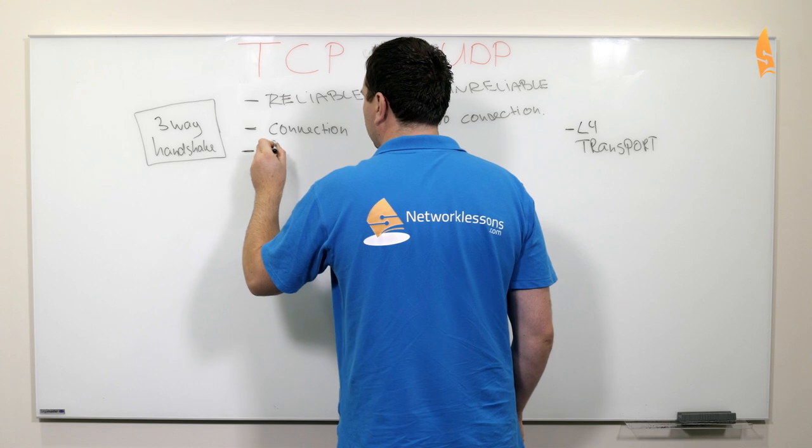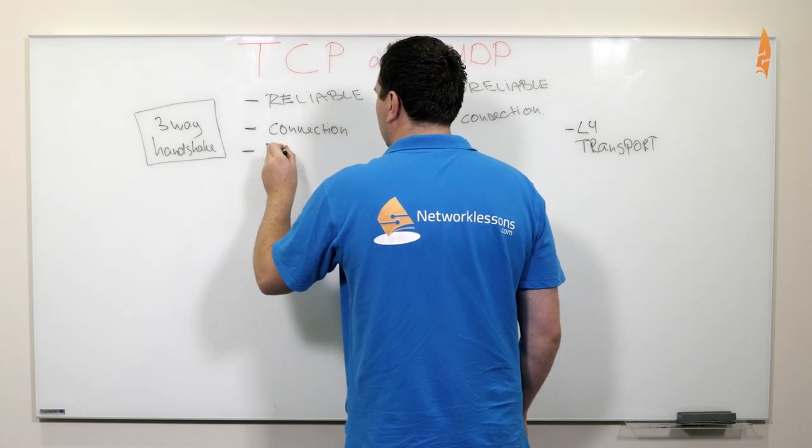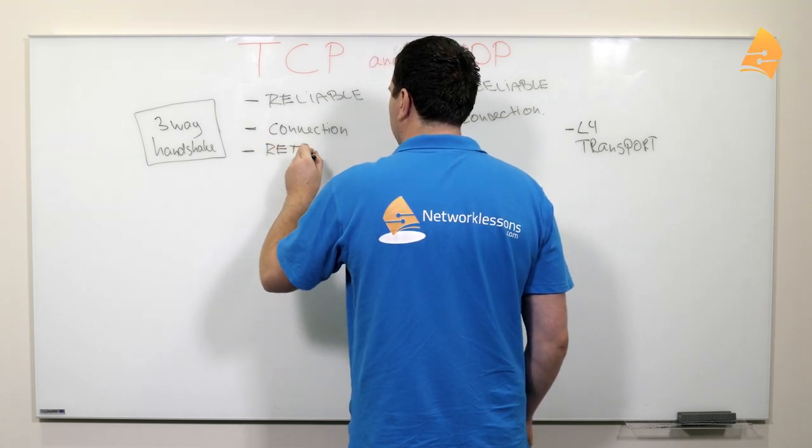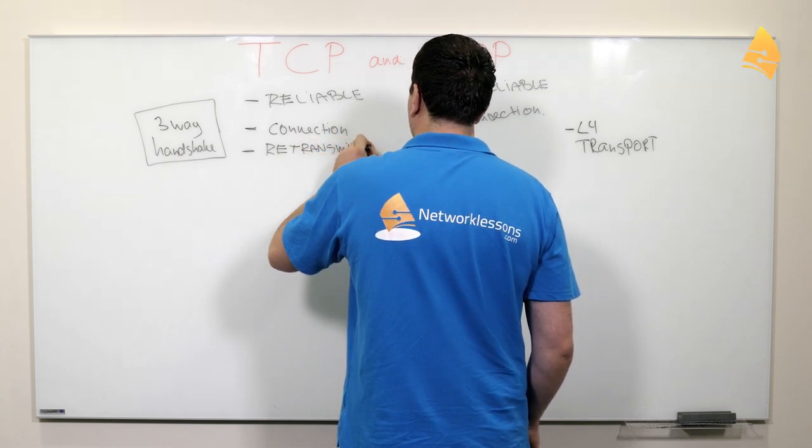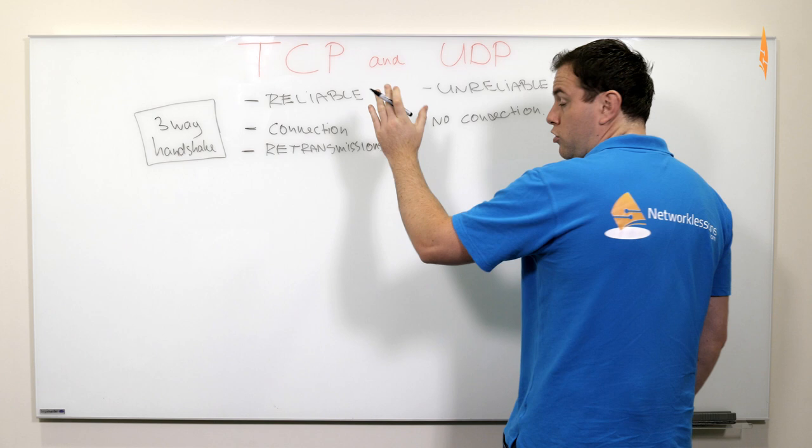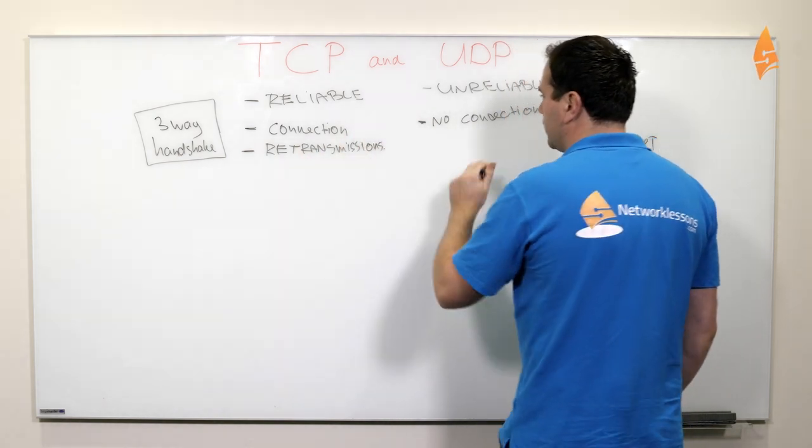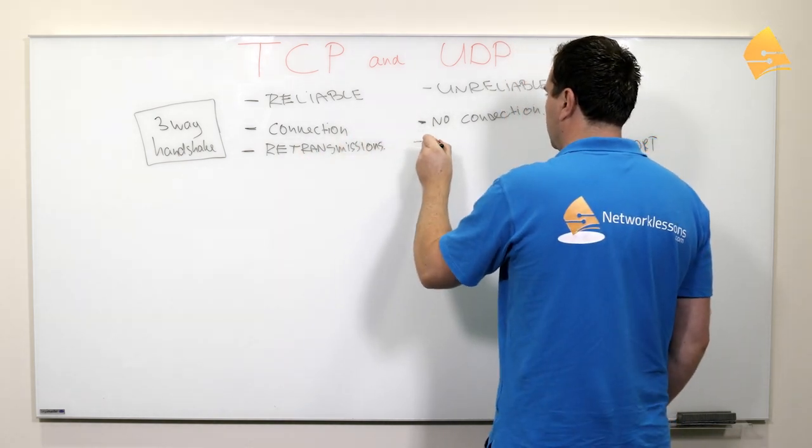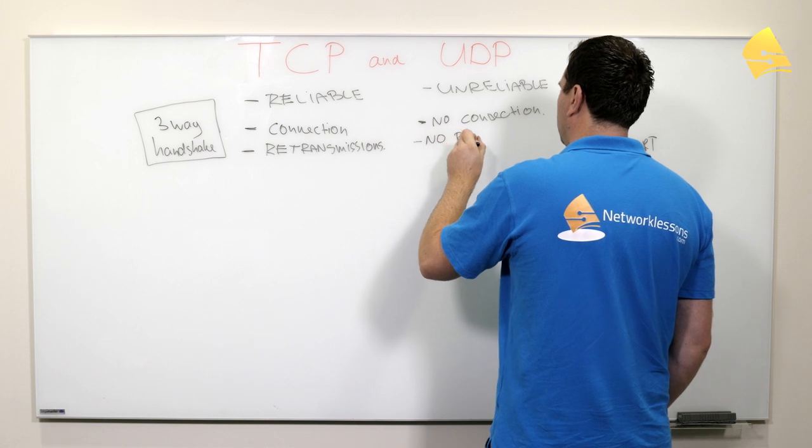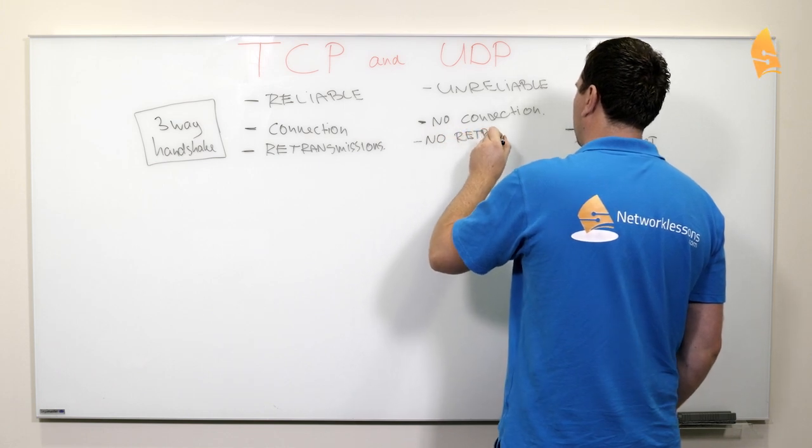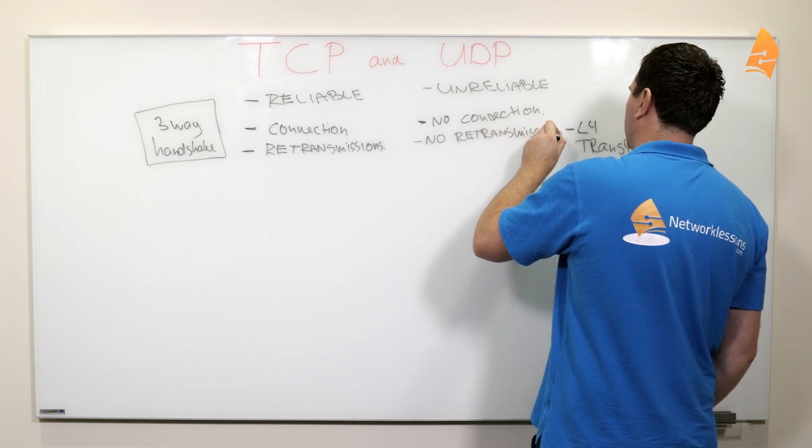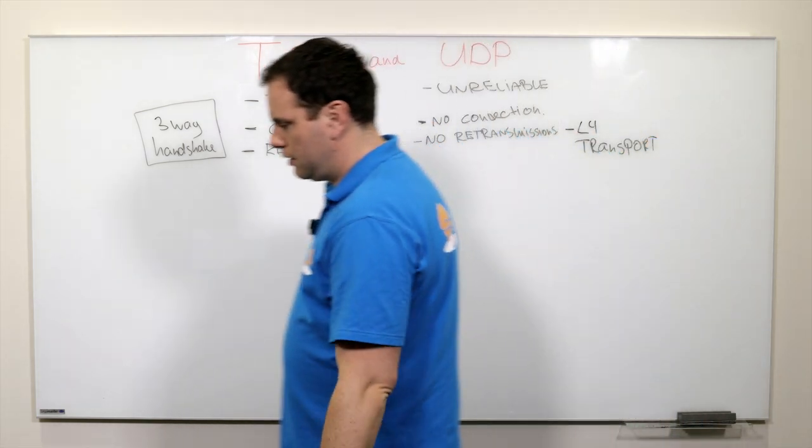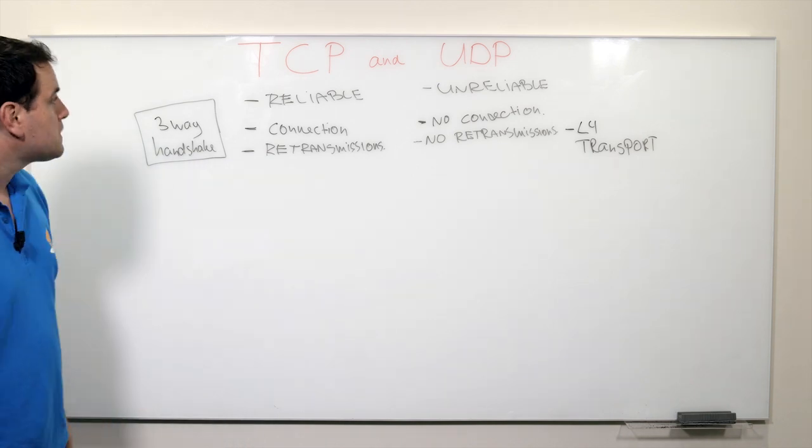TCP can do re-transmissions. So when something goes missing, TCP can re-transmit it again. UDP doesn't do this. So no re-transmissions. What else do we have?